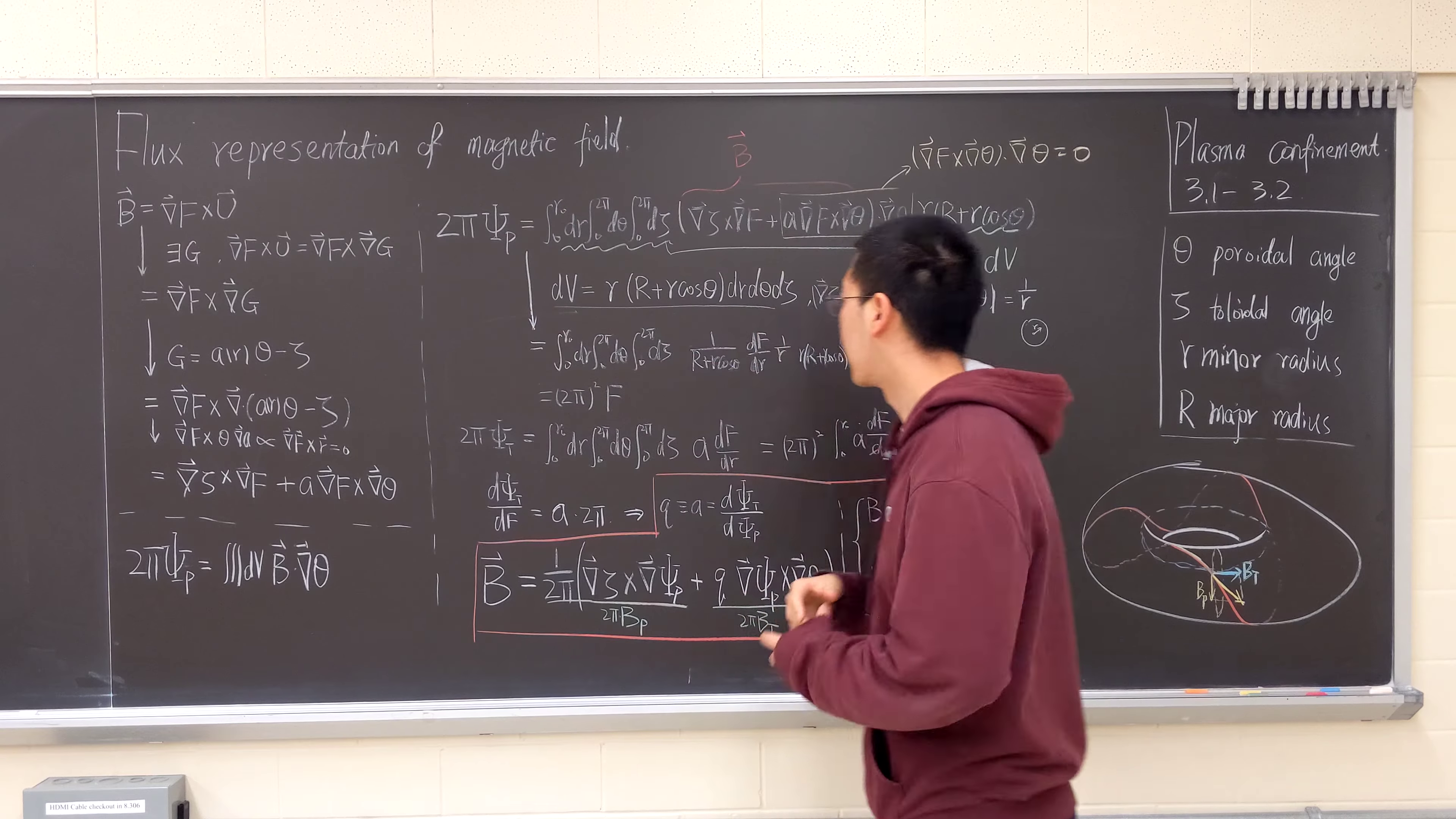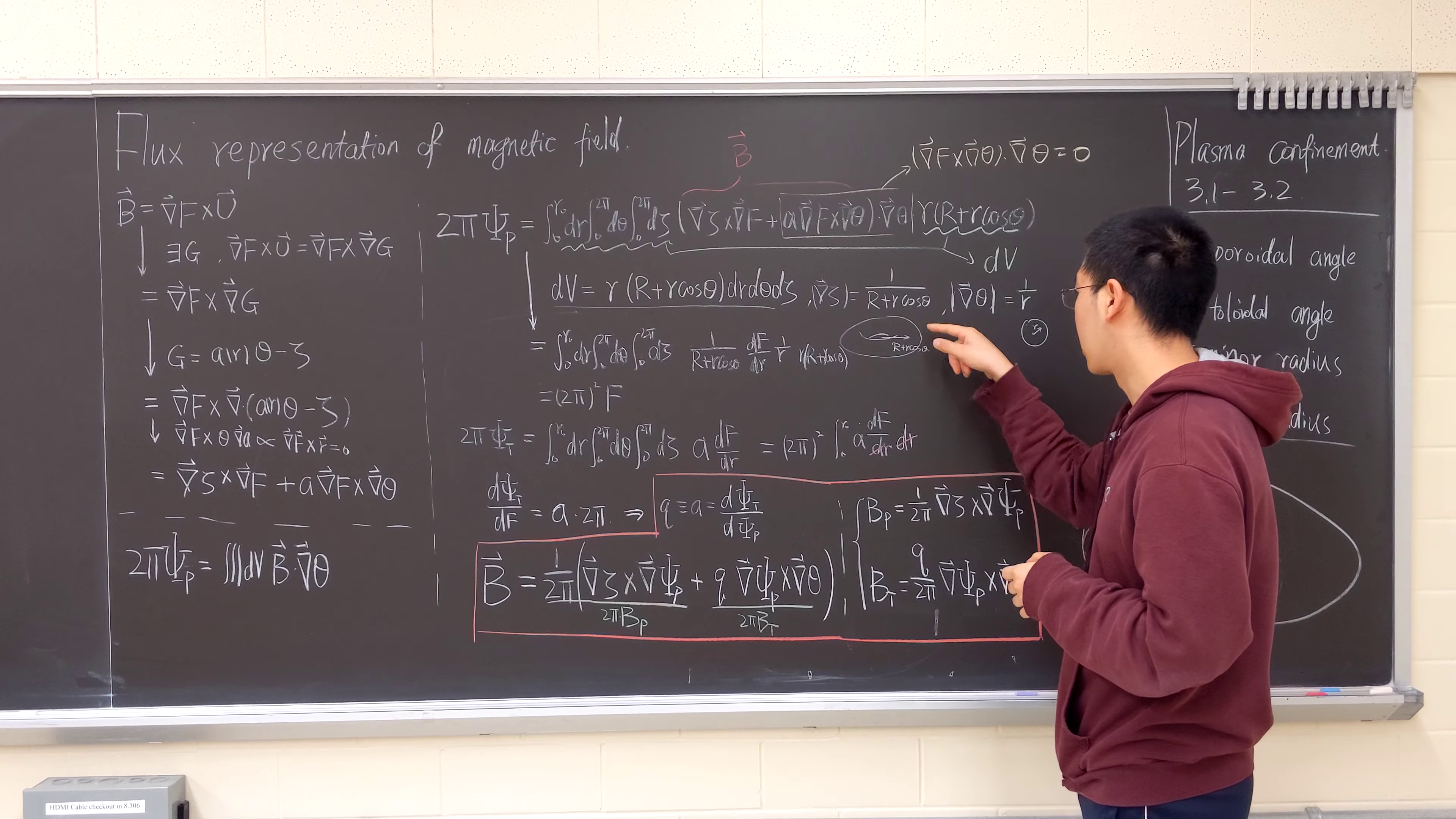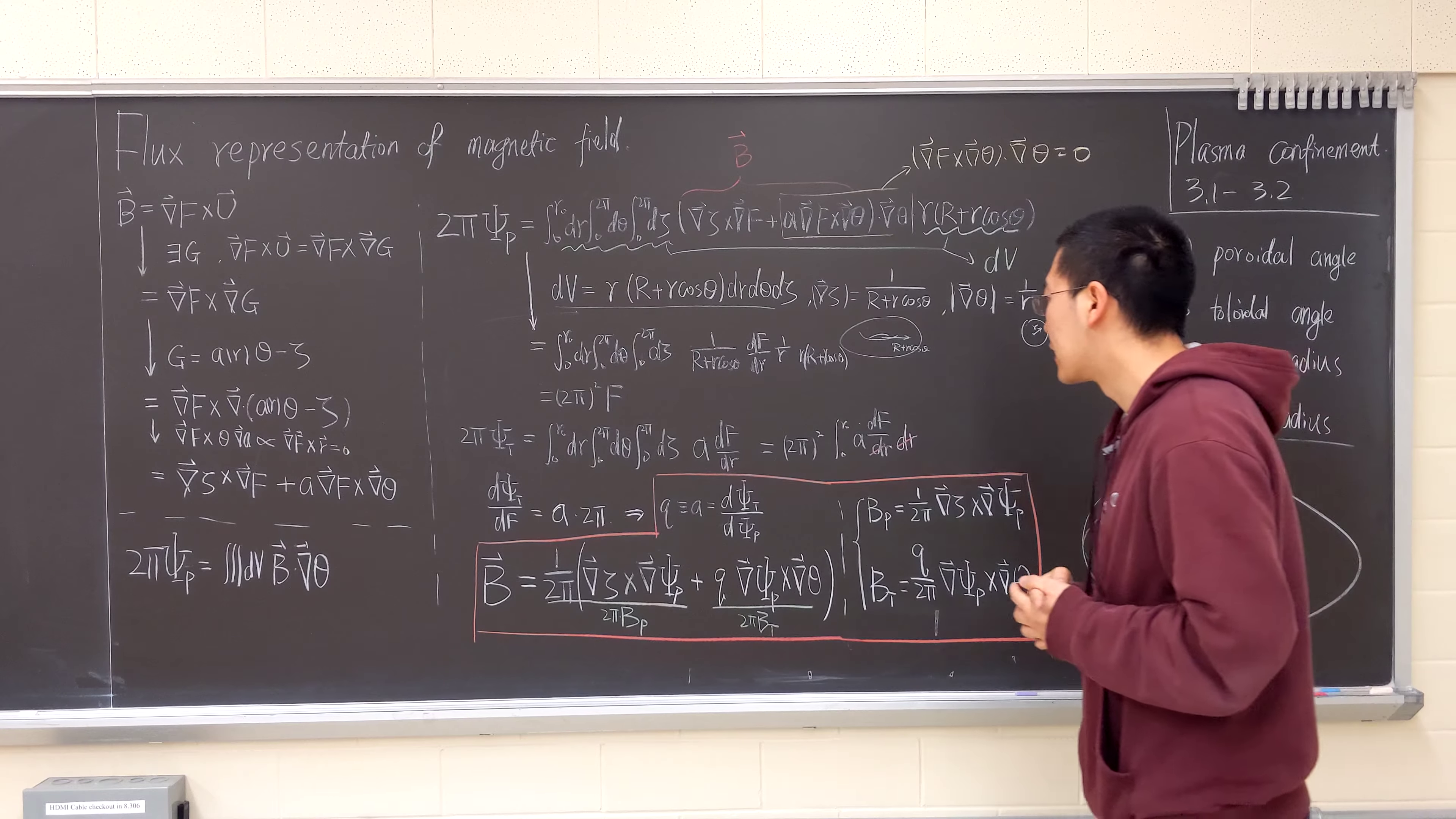So that's the expression. We know that for grad theta, the magnitude of that is one over R plus r cosine theta. You can think of it as a curvature in the toroidal direction. The modulus of R is like poloidal curvature.